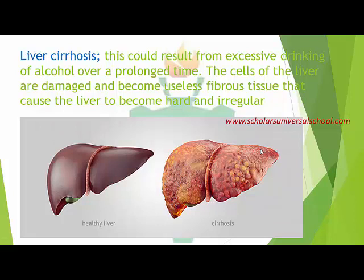Liver cirrhosis is another liver disease. One of the main causes is excessive drinking of alcohol over a prolonged period of time. People take lots of alcohol without knowing that they are doing more harm to their liver than they can imagine. The cells of the liver are damaged and become useless. The tissue becomes fibrous, causing the liver to become hard and irregular. Comparing a normal liver to one affected by excessive alcohol consumption, the cirrhotic liver has become fibrous, hardened, and irregular — and can no longer function well. This is one of the most dangerous diseases of the liver.